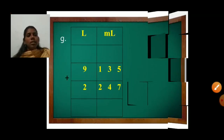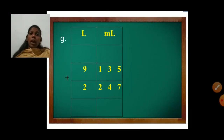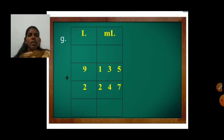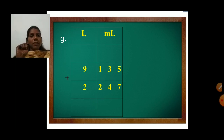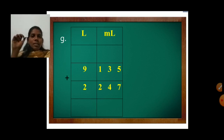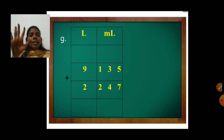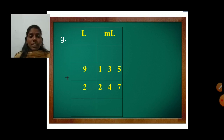Next is question G — there is an addition sign. So: 5 plus 7. We count: 6, 7, 8, 9, 10, 11, 12 — so 7 plus 5 is 12.